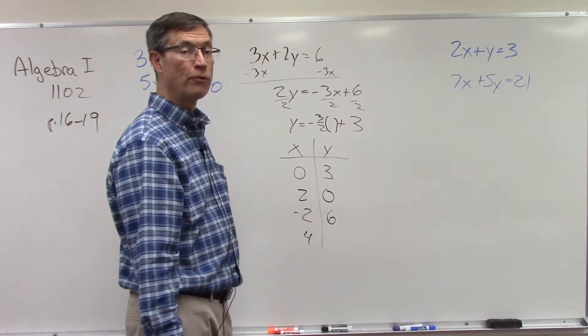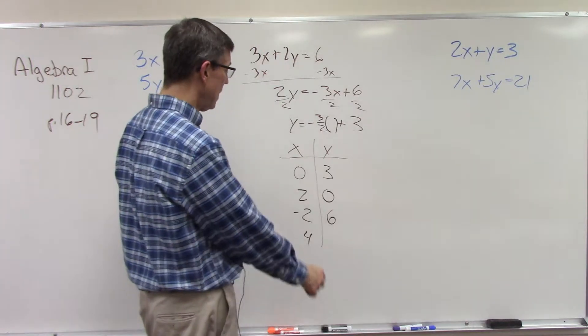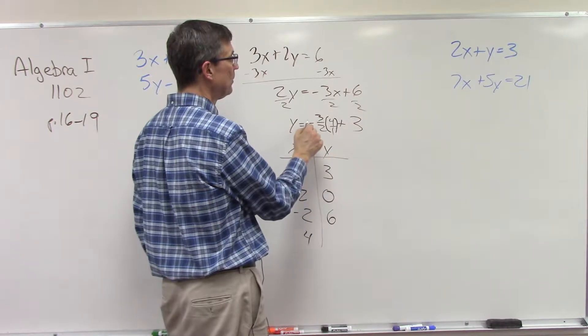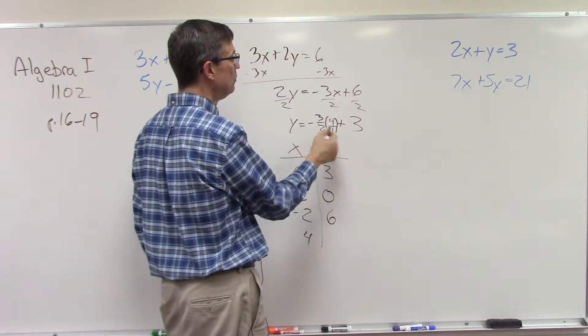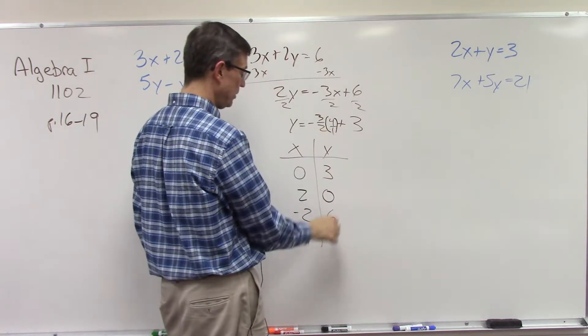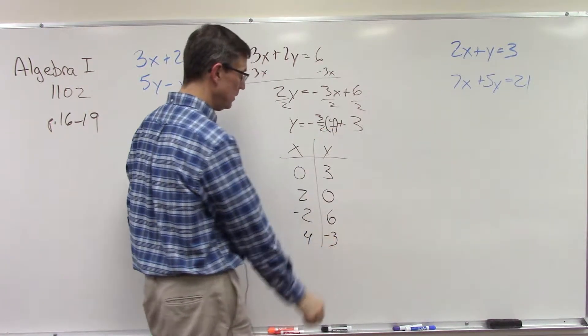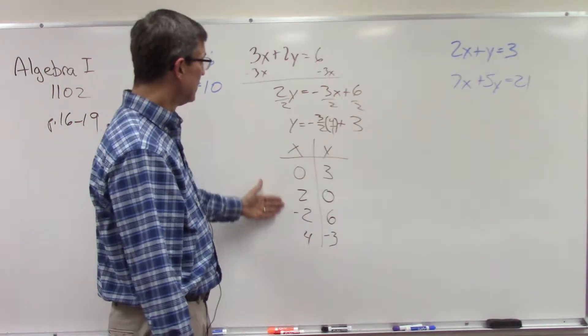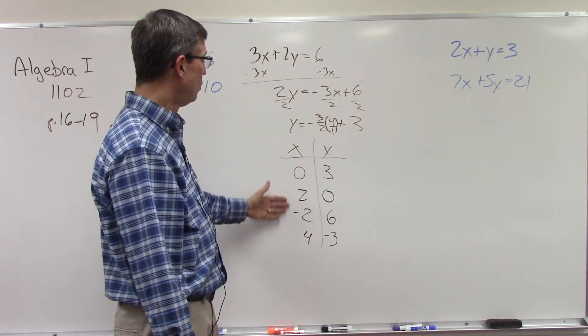Now watch the magic here. When I plug in 2, the 2 cancels against the denominator and I get negative 3 plus 3. Now let's plug in negative 2. The 2 will cancel but the negative times negative makes this positive. So now I have positive 3 plus 3 is 6. If I plug in positive 4, I would get negative 12 over 2 which would be negative 6, negative 6 plus 3 which would be negative 3.